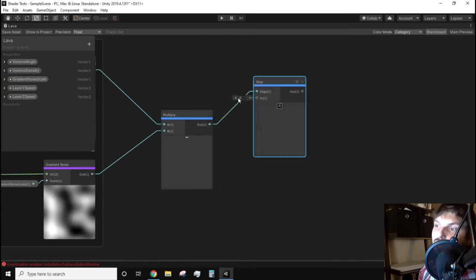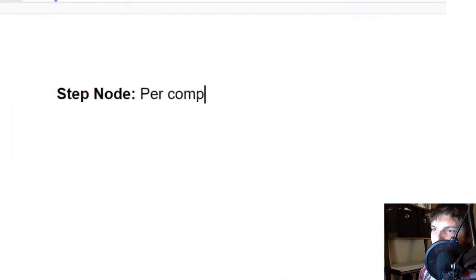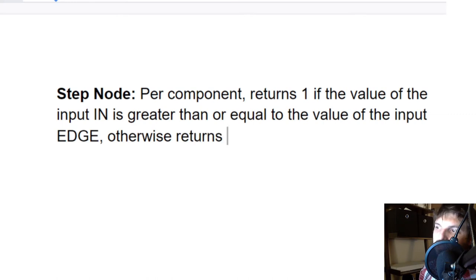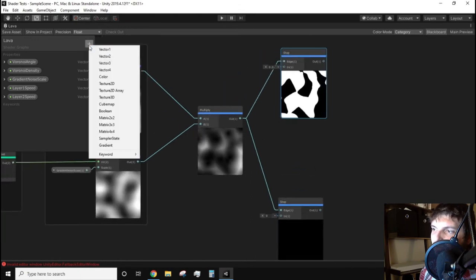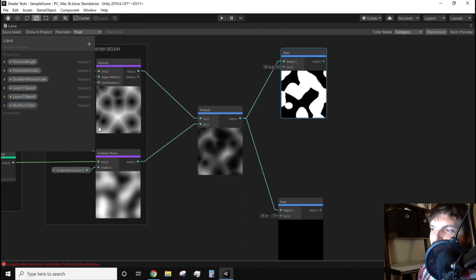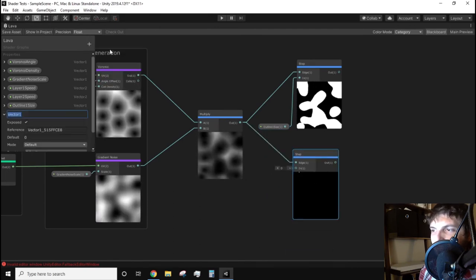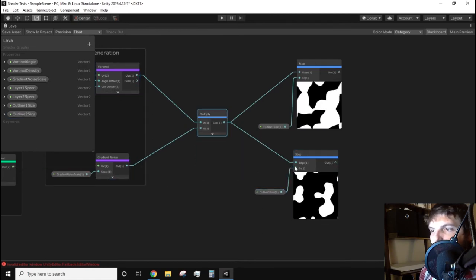To achieve this we'll use the step node. This accepts an edge which will be the output of our multiply and it also has an input called n. The step node checks the values of all the pixels and based on the n value will convert the pixel value to either a 1 or a 0. Using this to our advantage we need to create two step nodes and feed our output of the multiply into the edge input. We can now have two of the same shapes but at varying sizes. So let us create two vector1 properties. I'm going to name them outline1 size and outline2 size. Plug each property into one of the step nodes in input slot.